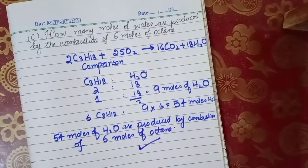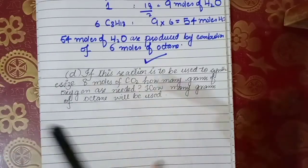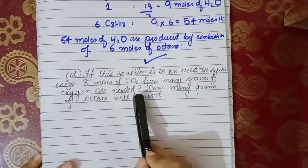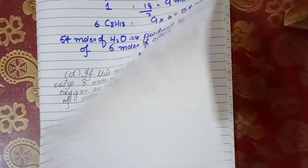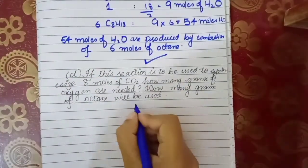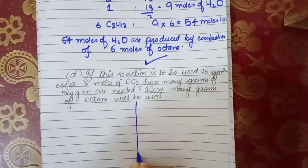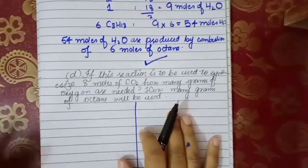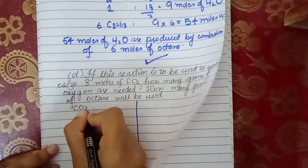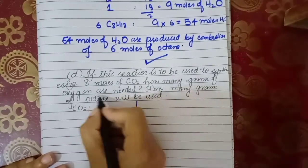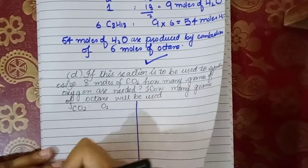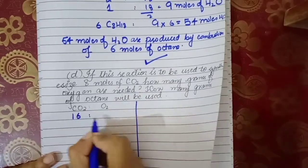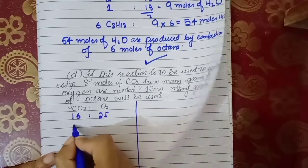Now the last part, which is slightly different. Here we need to find mass in grams. If this reaction is to be used to synthesize 8 moles of CO₂, how many grams of oxygen are needed? The known quantity is CO₂, so it is written on the left side, and what we have to find is written on the right side. CO₂ given is 8 moles.